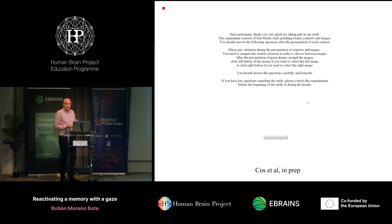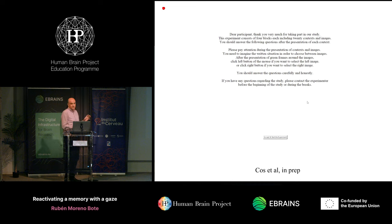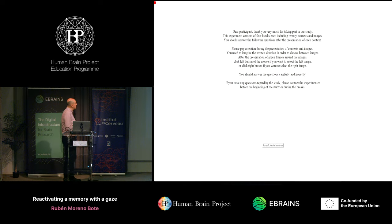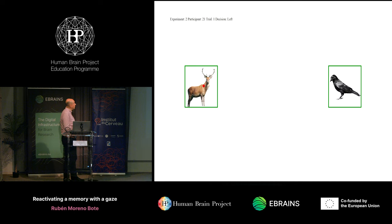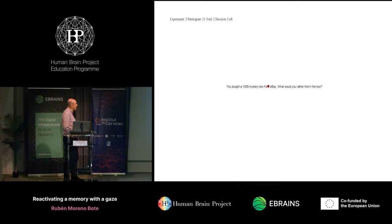Now in a second condition of very much the same experiment, images disappear in the late phase. Again there's a context, two offers appear, but then they disappear and we keep track of the participant's gaze as they make up their mind about the choice.